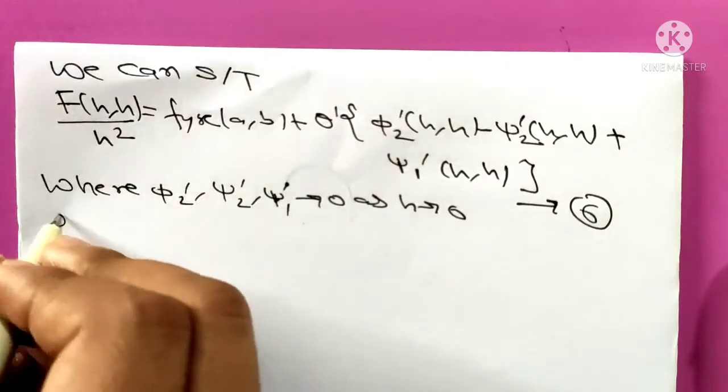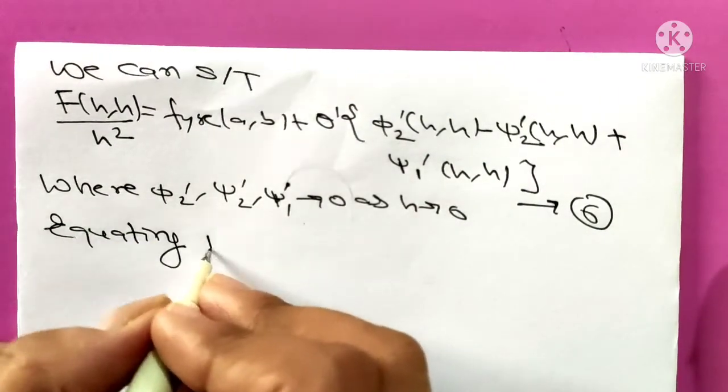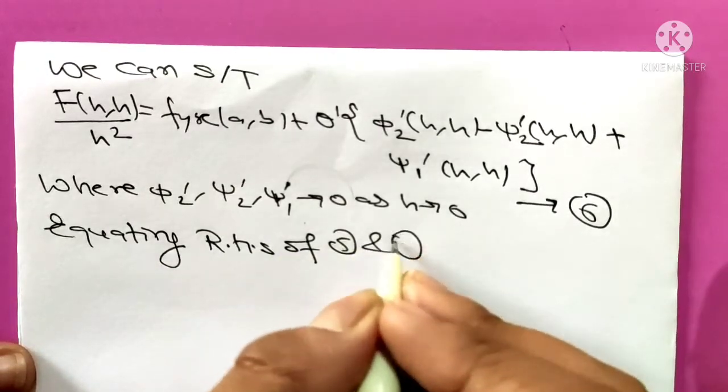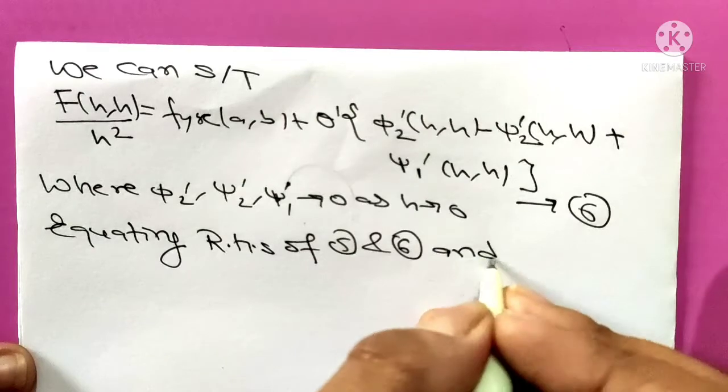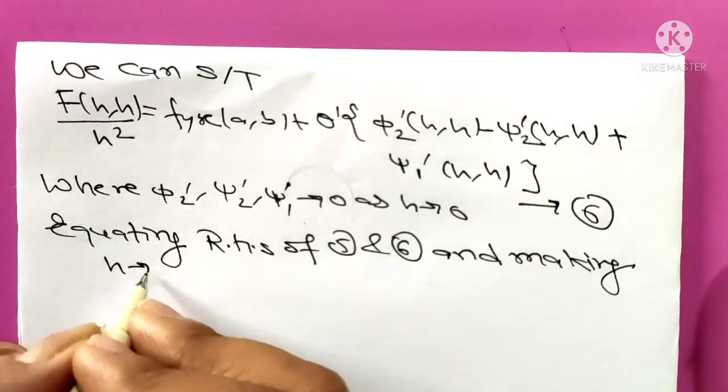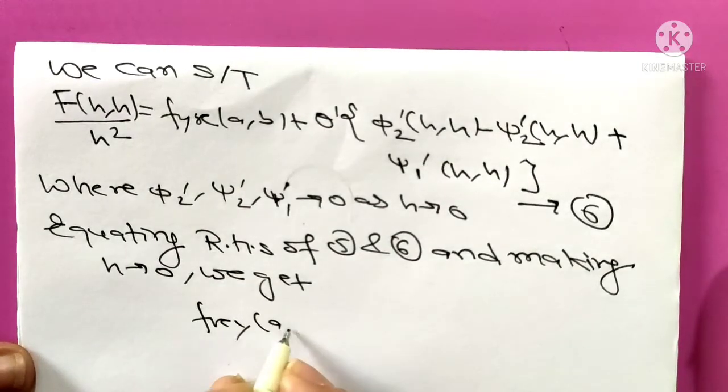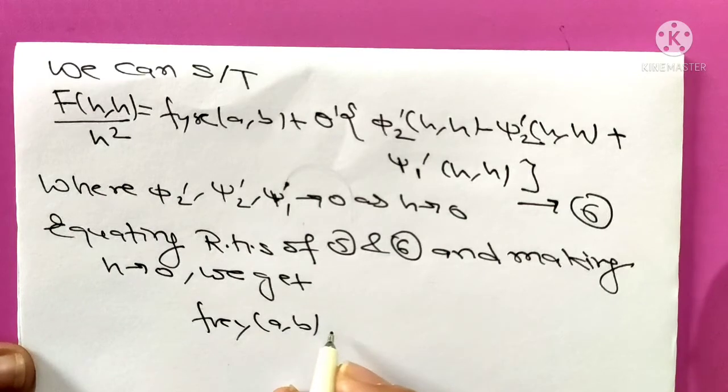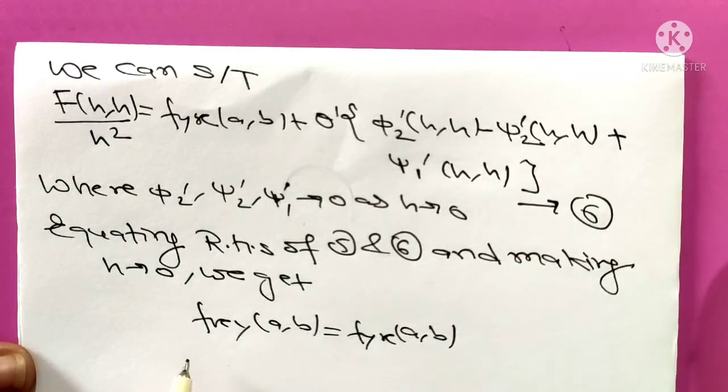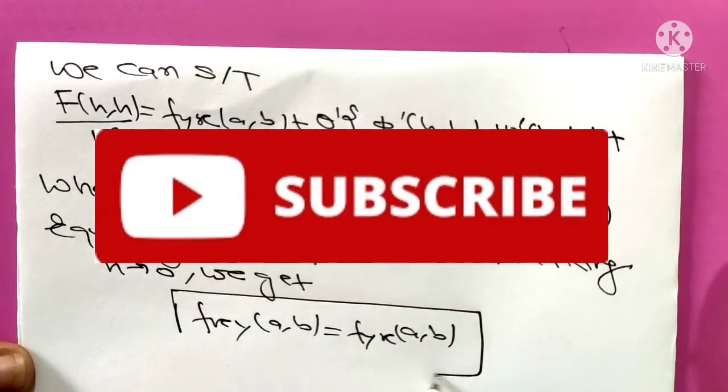Now equating right hand side of equation 5 and 6 and making h tend to 0, taking limit as h tends to 0 on both sides, we get fxy at point ab equals fyx at point ab. So this is the proof of the theorem.